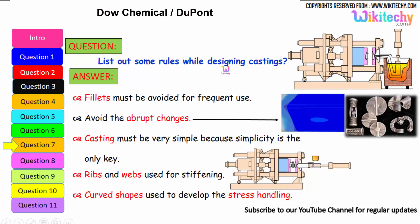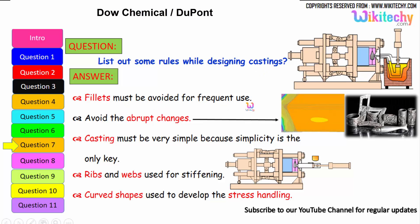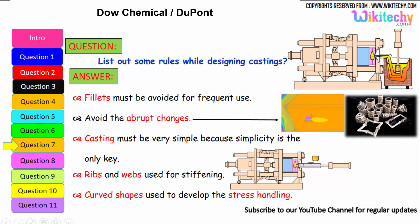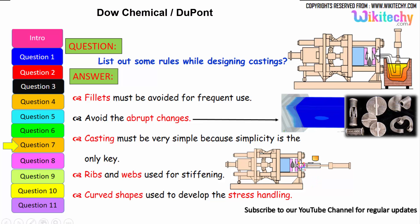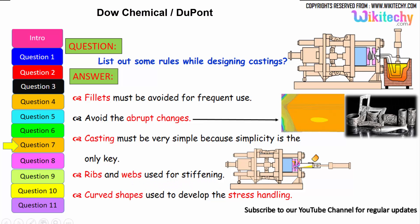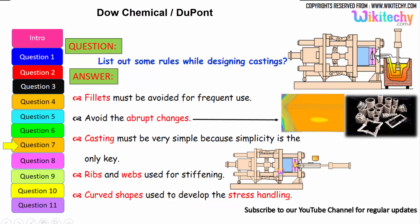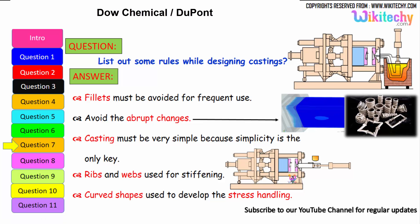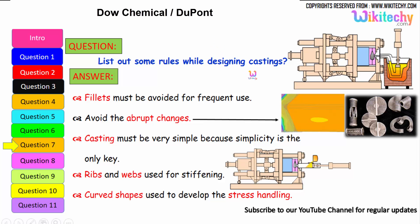Let us see some rules while designing castings. Fillets must be avoided for frequent use. Avoid abrupt changes in section. Castings must be very simple — simplicity is the key. Ribs are used for stiffening. Curved shapes should be used to improve stress handling. These are the rules to follow for casting design.